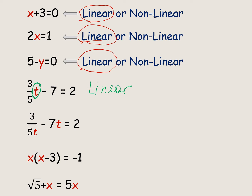Next, we have a very interesting situation. According to the property of exponents, we can rewrite this equation as 3/5 times t to the negative 1, minus 7t, equals 2. Our variable now has power equal to negative 1, so it is a nonlinear equation.